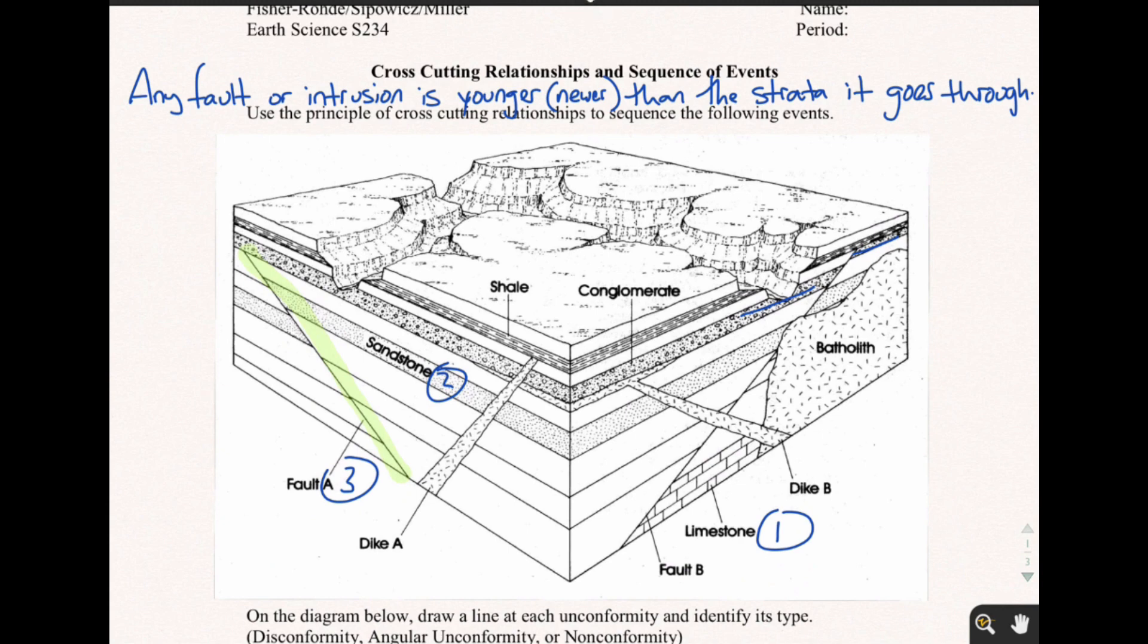And now through that whole discussion, we actually just figured out what number four is. Number four has to be the conglomerate. Why is for the conglomerate? Because after the conglomerate cuts in, everything else either cuts through it, goes over it, goes under it. So number four must be the conglomerate.